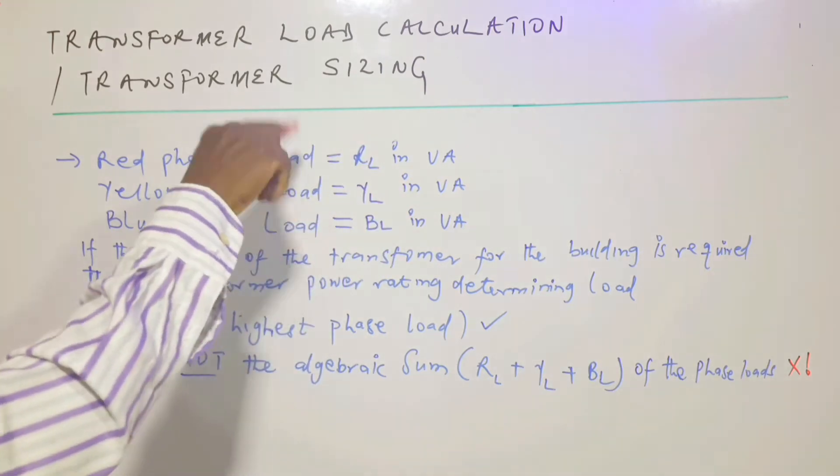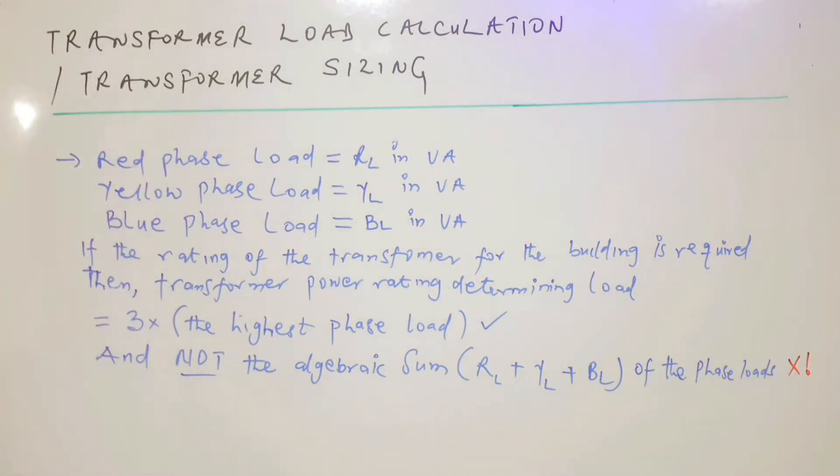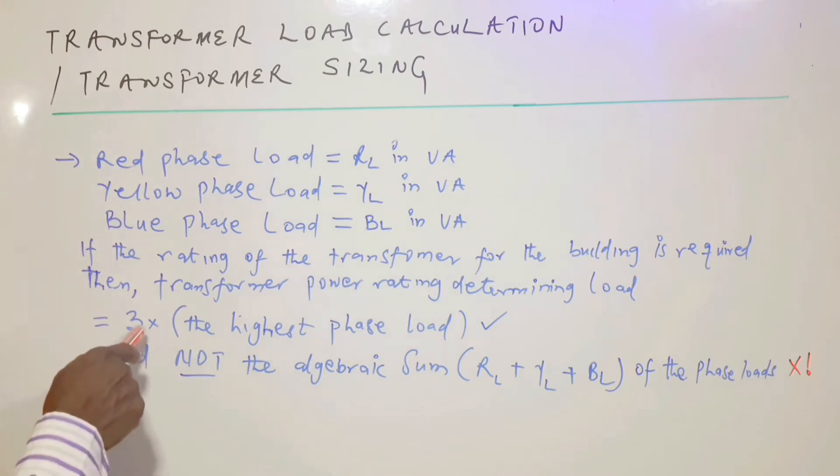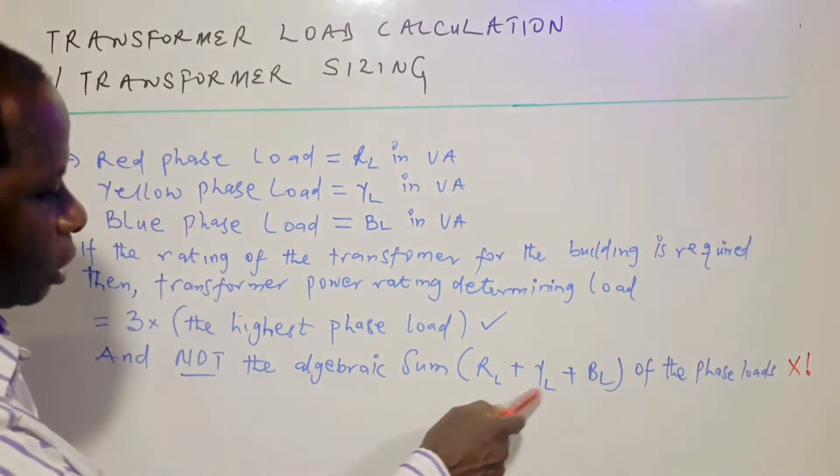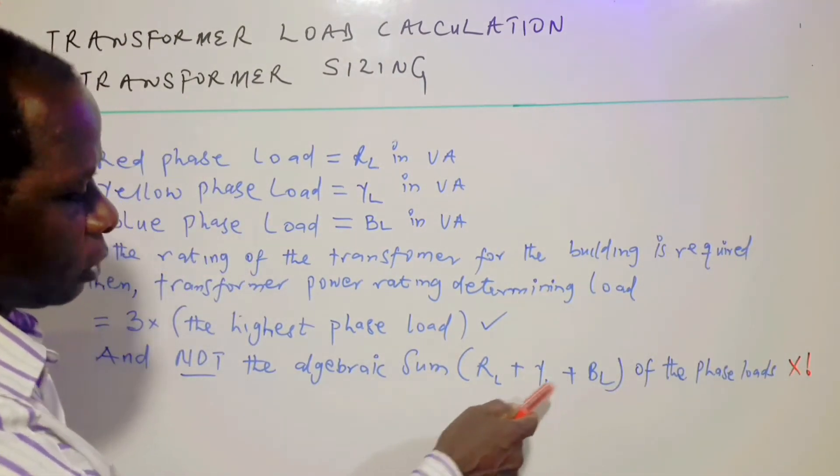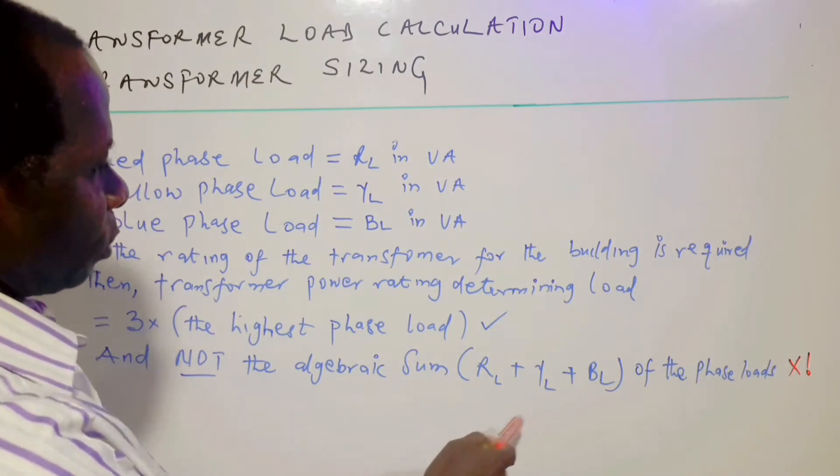When the loads are given in values, that is as figures, we look at the highest and multiply the highest load by three. That is what we form the determining load for the rating of the transformer that will be required. And not the algebraic sum of the phase load. This is the algebraic sum of the phase load: RL plus YL plus BL.